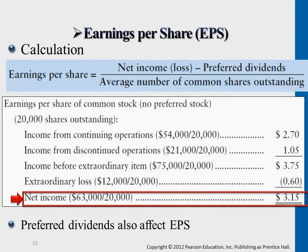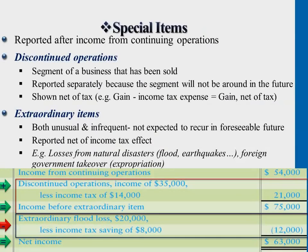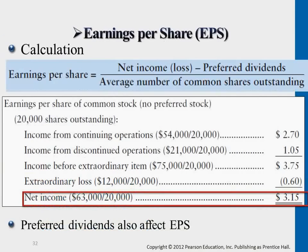The income statement measure we're looking at is earnings per share. This is simply using net income and dividing it by the number of shares outstanding — that's all there is to this EPS measure. This measure is often used by creditors and investors to evaluate and compare different businesses' earnings that can be attributed to each share.